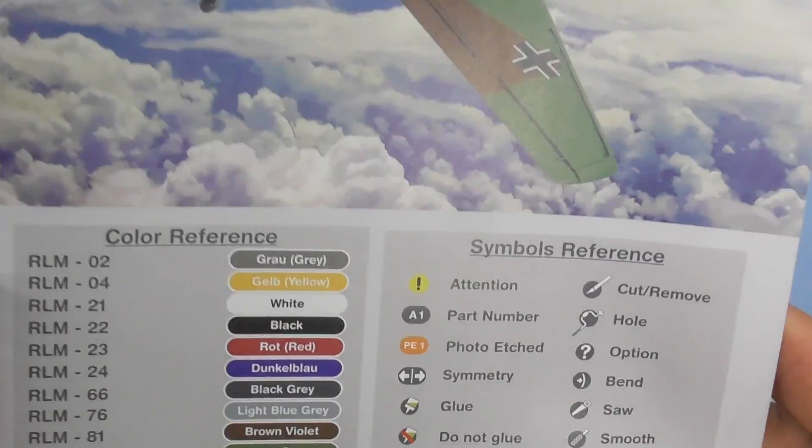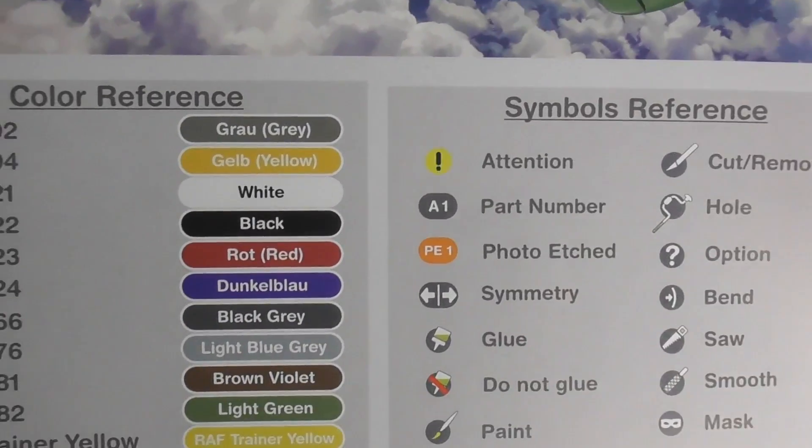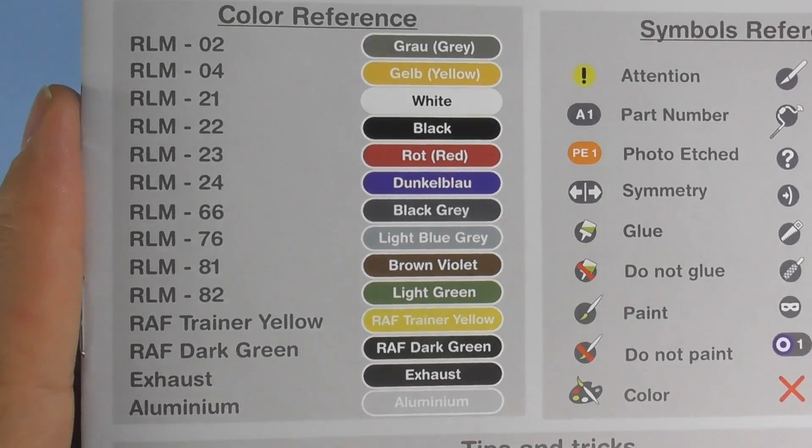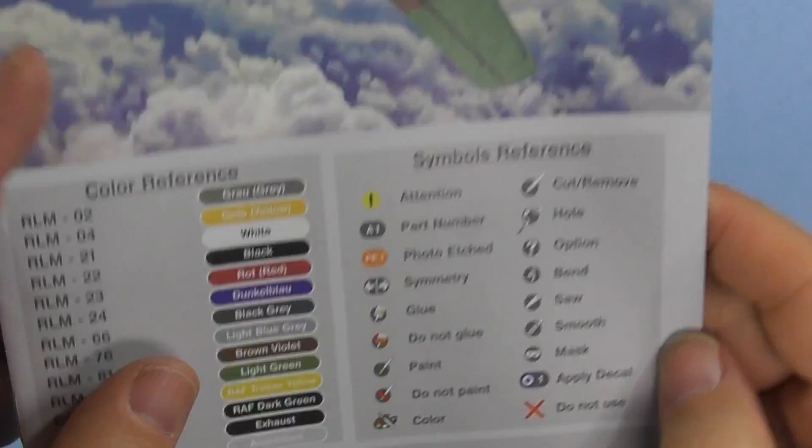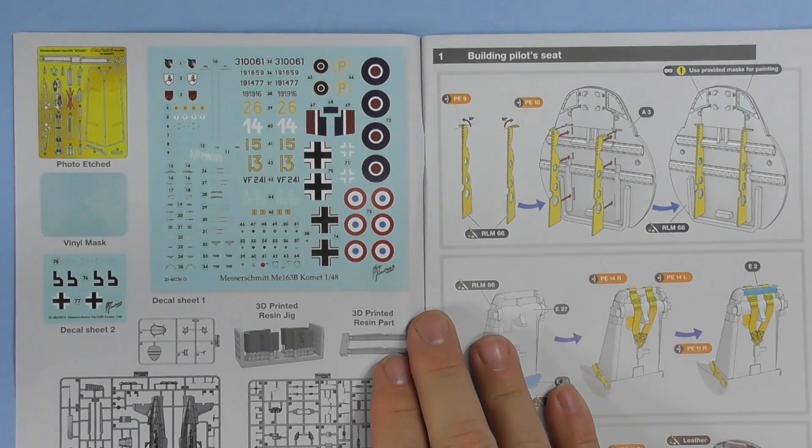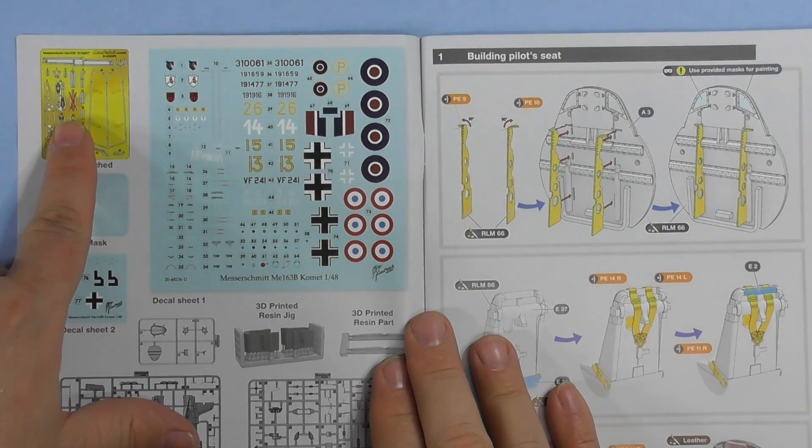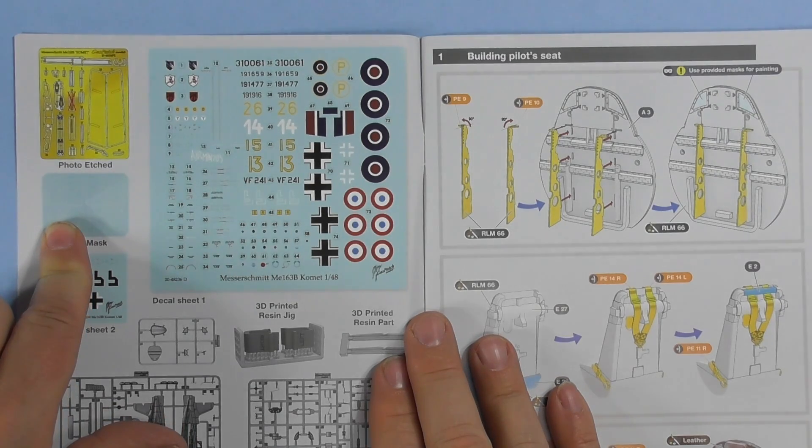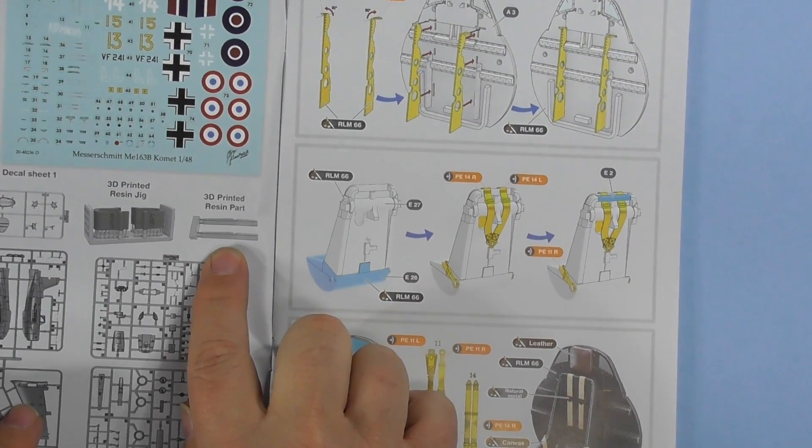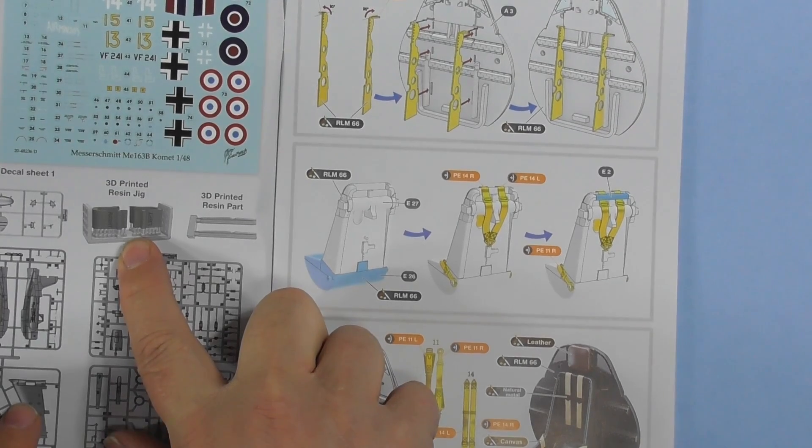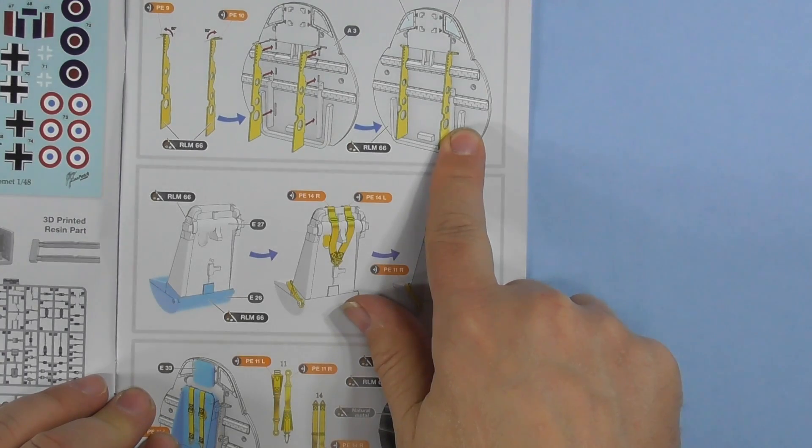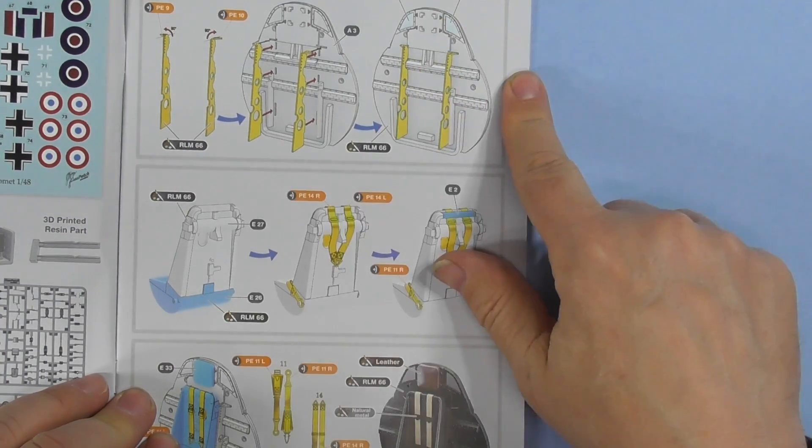Nice box art. There is your color callout, and I like it because it's no particular brand - it just gives you RLM numbers and colors, so you can choose your own brand of paint. Some tips and tricks. Sprue map, decals, vinyl mask, and PE, which apparently don't use that one PE part. It's not showing the 3D resin part.